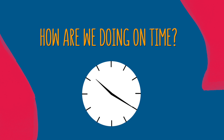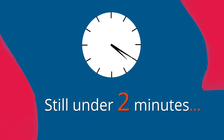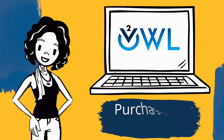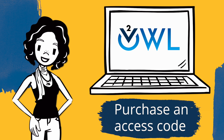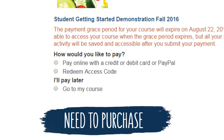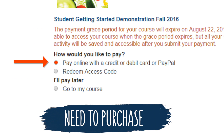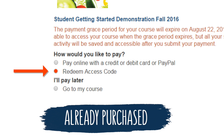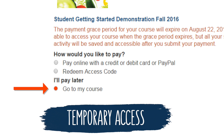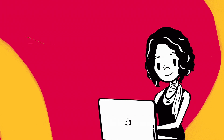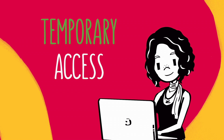Still under two minutes and we're nearly done. To access all the helpful tools throughout your course, you'll need to purchase an access code. If you still need to purchase a code, select 'Pay online' with a credit card, debit card, or PayPal and we'll get you set up in no time. If you've already purchased an access code, select 'Redeem Access Code.' Need more time? No problem — jump right in with temporary access. You'll need to purchase your course within the next couple of weeks, but we want you to be able to begin your course on the right track.